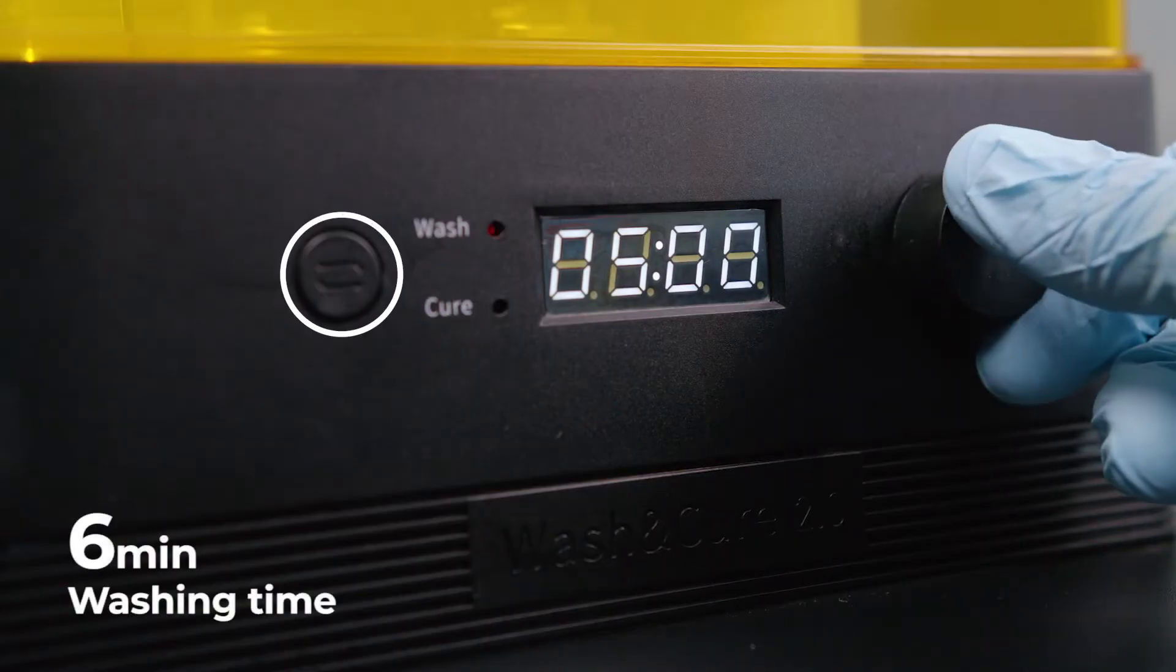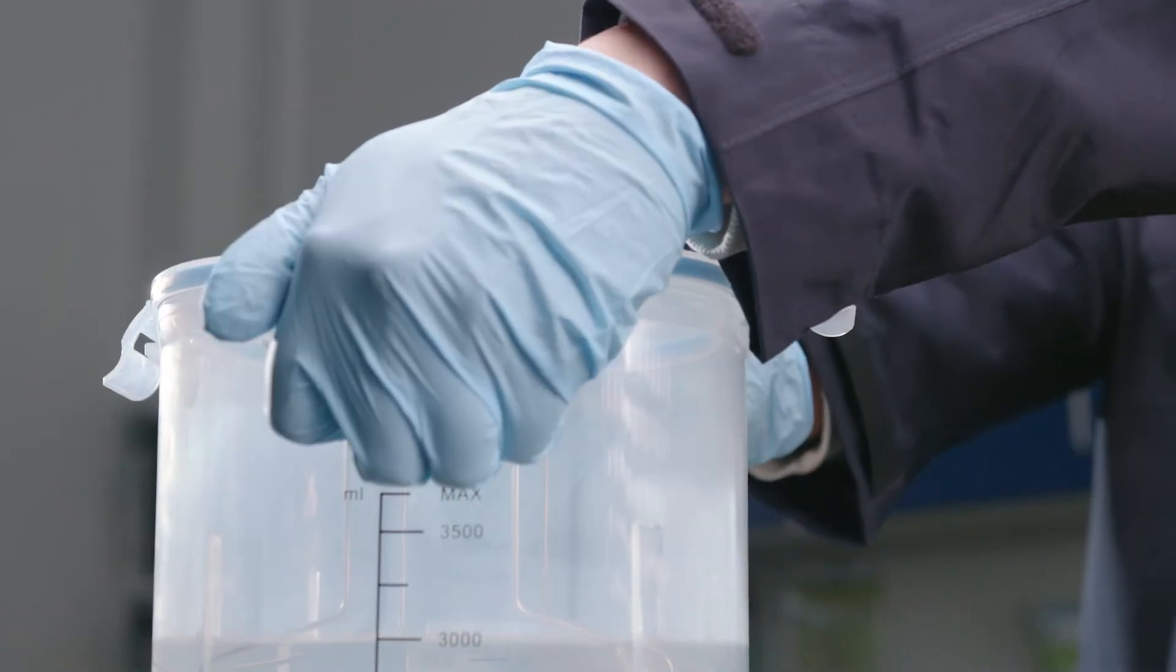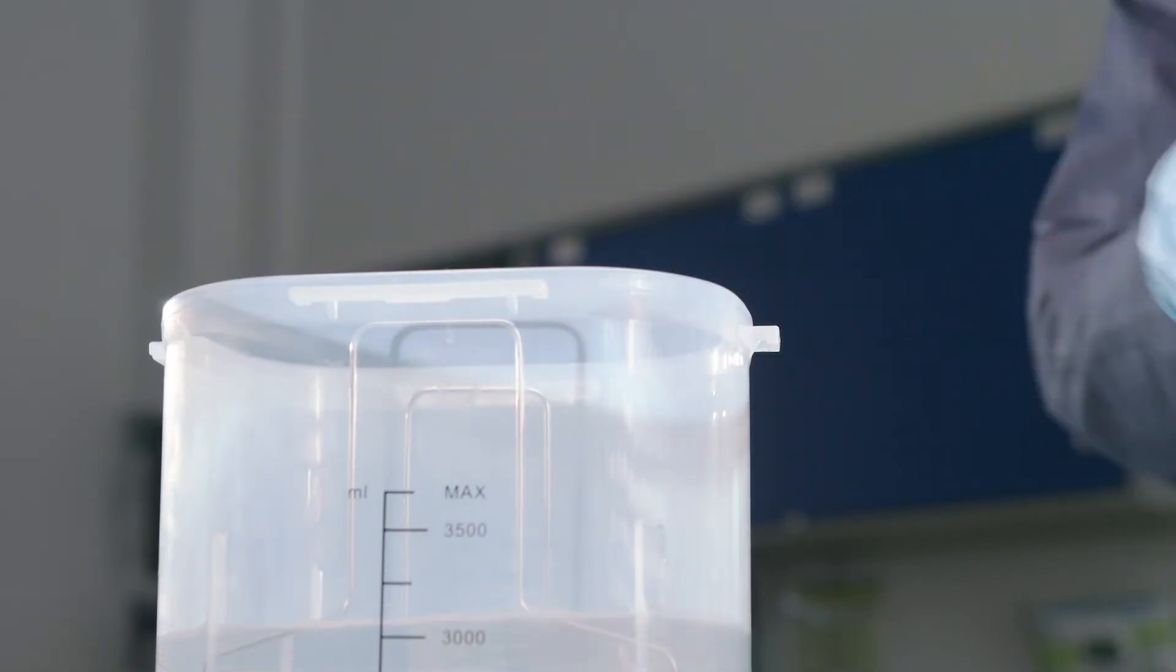The container is inserted in the finishing station. This station is closed with the lid. The button on the front of the printer must first be set to wash. The time can be set to 6 minutes with the rotary control. The wash process can be started.